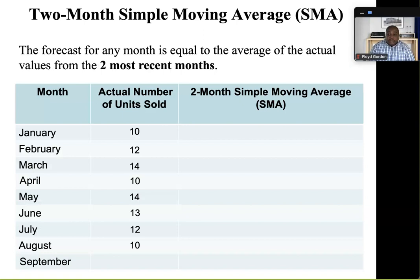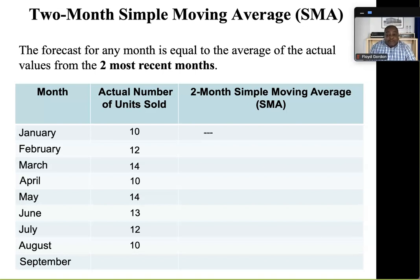We want to do a two-month simple moving average forecast for this company, so the forecast for each month will equal the average of the actual sales from the previous two months. For January, we do not have figures for the previous two months, so we must skip January. For February, we have the previous month but not the figure for December, so we also skip February.